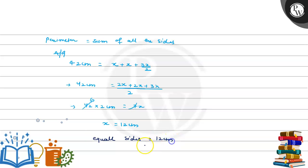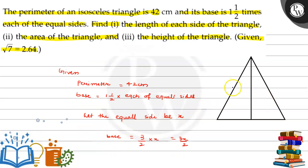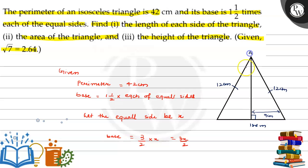We let x be the length of the equal side, so equal sides are equal to 12 centimeter. Now base is equal to 3x by 2, that means 3 into 12 by 2, which equals 18 centimeter. So equal side length is 12 centimeter and base is 18 centimeter. As we know, in an isosceles triangle the perpendicular bisects the base into two equal lengths, so each half is 9 centimeter.